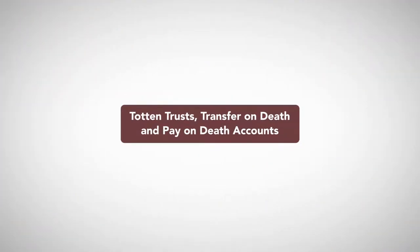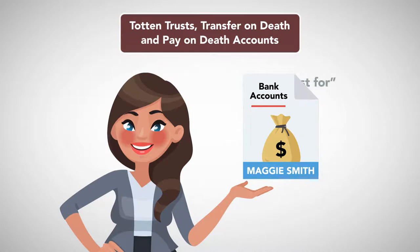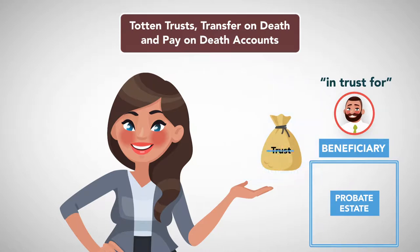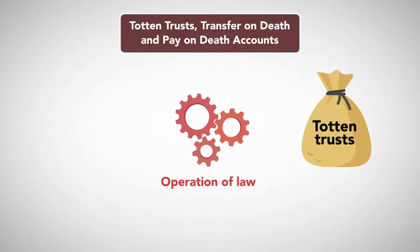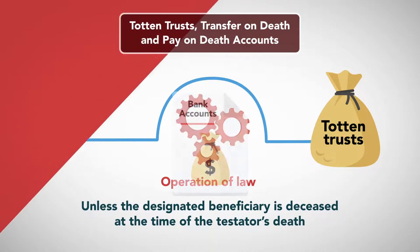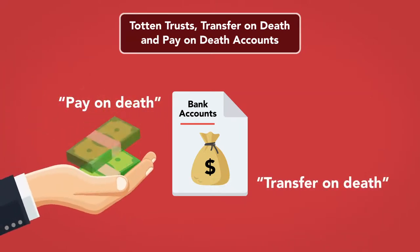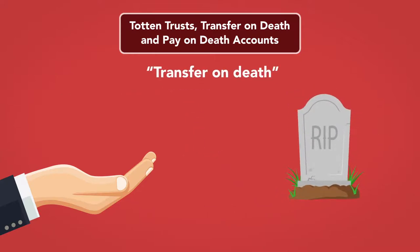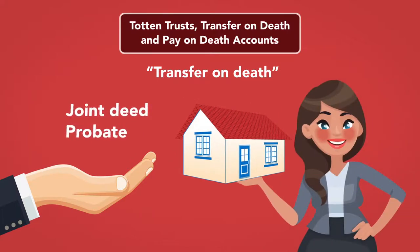Totten trusts, transfer on death and pay on death accounts. A bank account owned by a testator in her name but which is designated as in trust for a beneficiary does not become part of the probate estate. Though not technically trusts, these are sometimes called Totten trusts after the New York case matter of Totten that discussed them. They pass by operation of law outside of probate unless the designated beneficiary is deceased at the time of the testator's death. Similarly, designations on accounts such as pay on death or transfer on death are often used to transfer bank and investment accounts to a beneficiary at death without the need for probate. A transfer on death deed may also be executed and recorded for real property, allowing its transfer to a beneficiary at death without the need for a joint deed or probate.